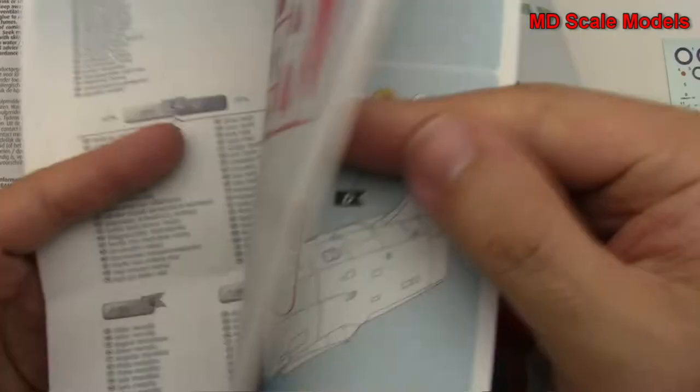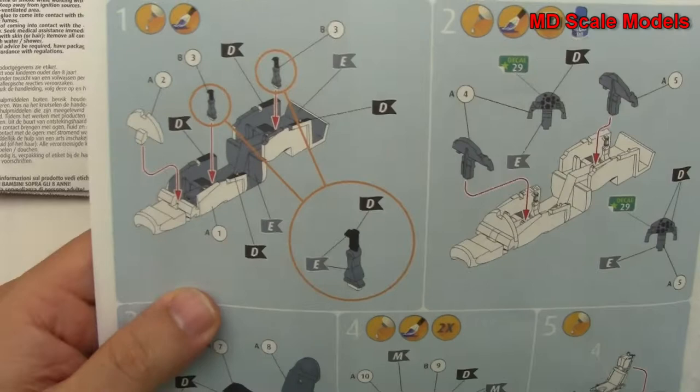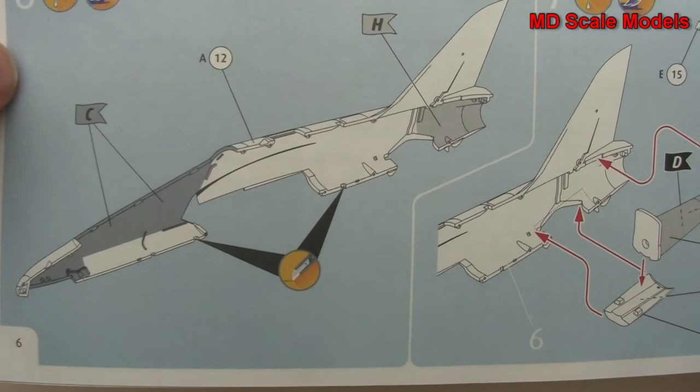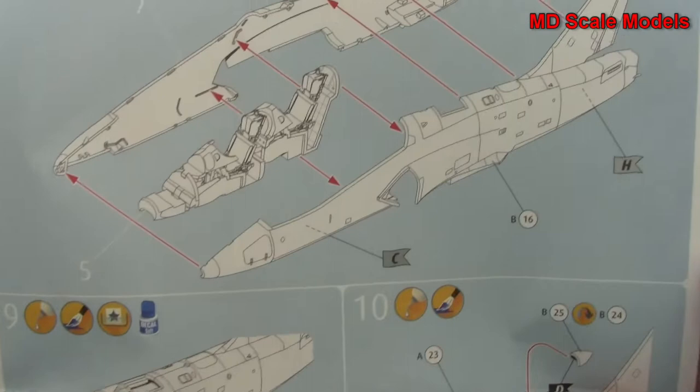We start off with our cockpit there and put our instrument panels in. Fair amount of detail here that goes into building this cockpit. And in our fuselage, we start to build the exhaust there and put our fuselage together with the cockpit.